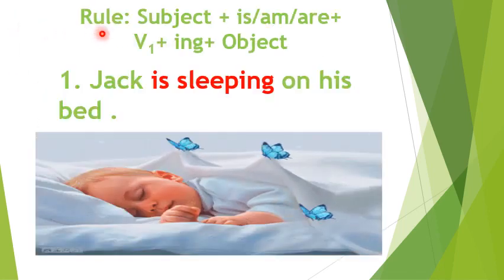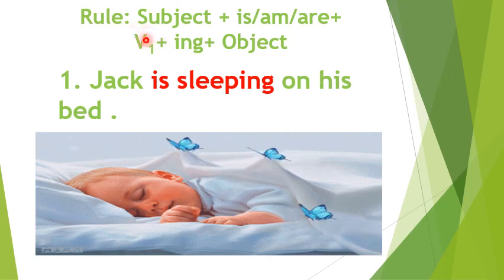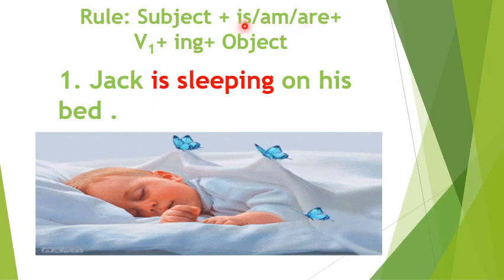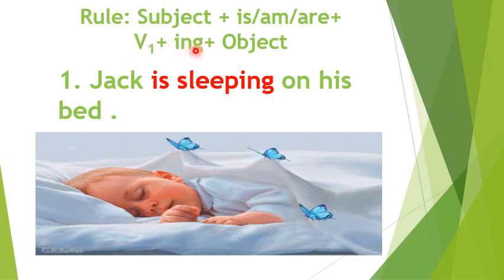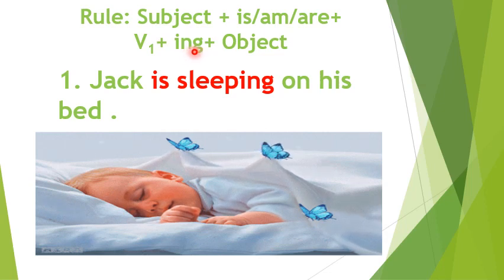Let's see the rule to write and recognize the present continuous tense. For writing sentences in present continuous tense, we start with the subject, plus 'is', 'am', or 'are' as the helping verbs. We use 'is' when the subject is singular, 'am' when the subject is 'I', and 'are' when the subject is plural. Then we add V1 — the first form of the verb — plus -ing, so that we can recognize it easily as continuous tense, followed by the object.